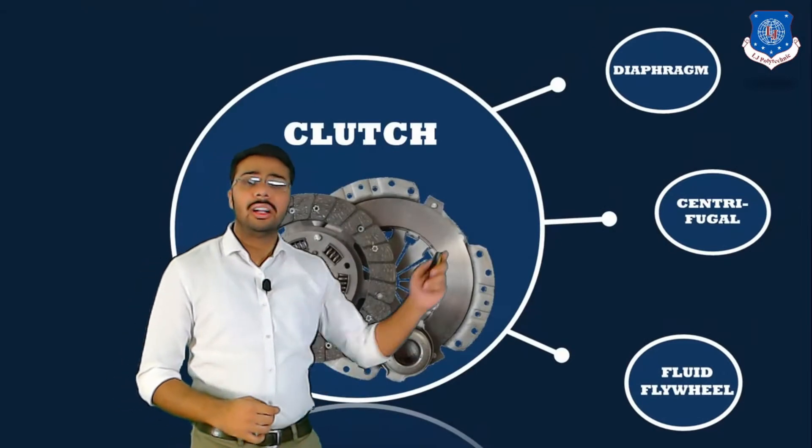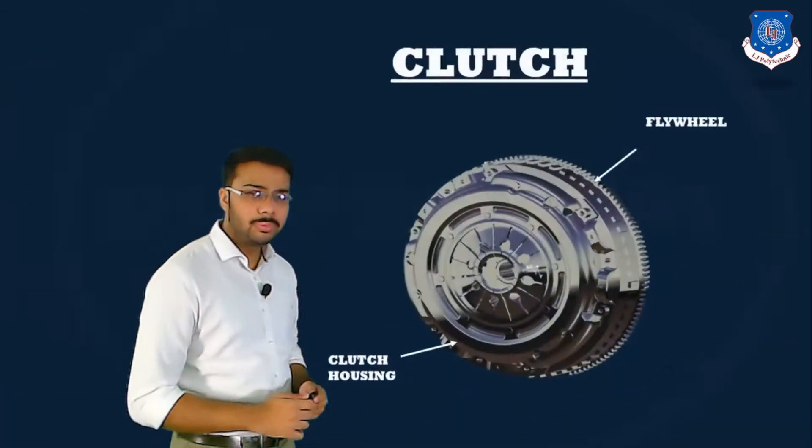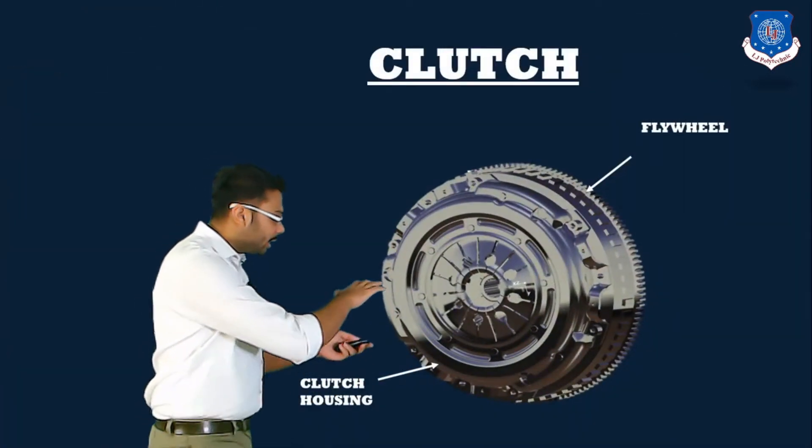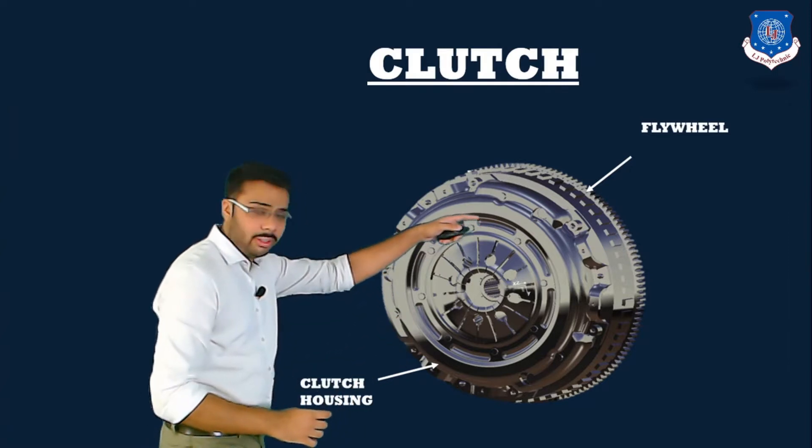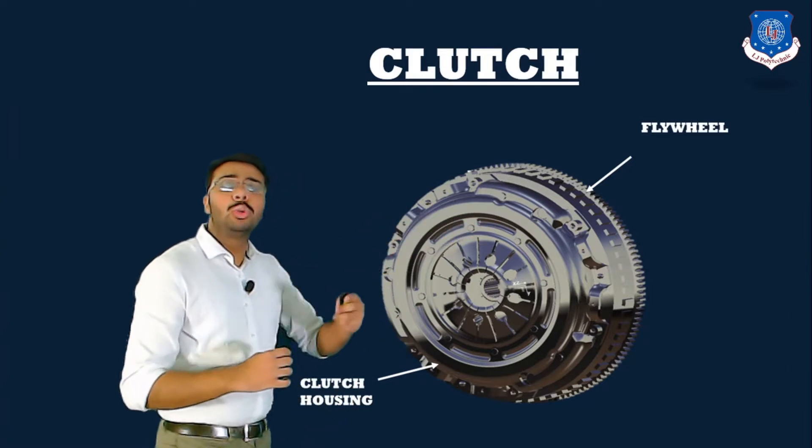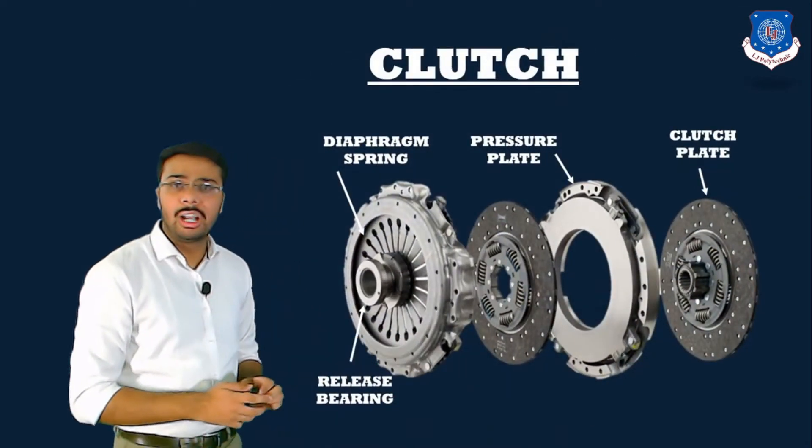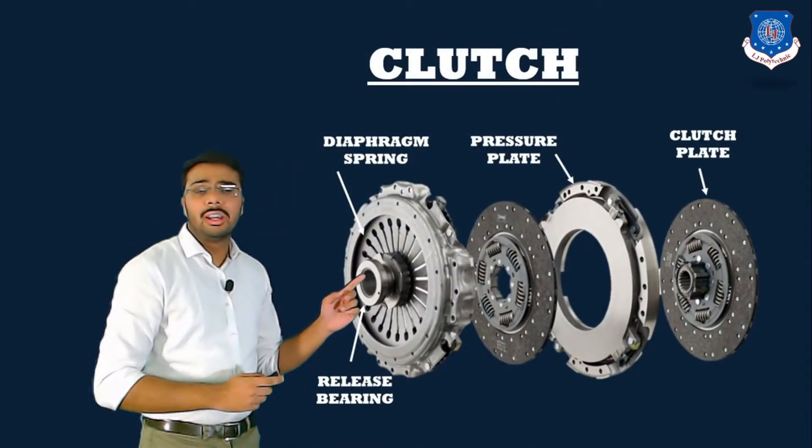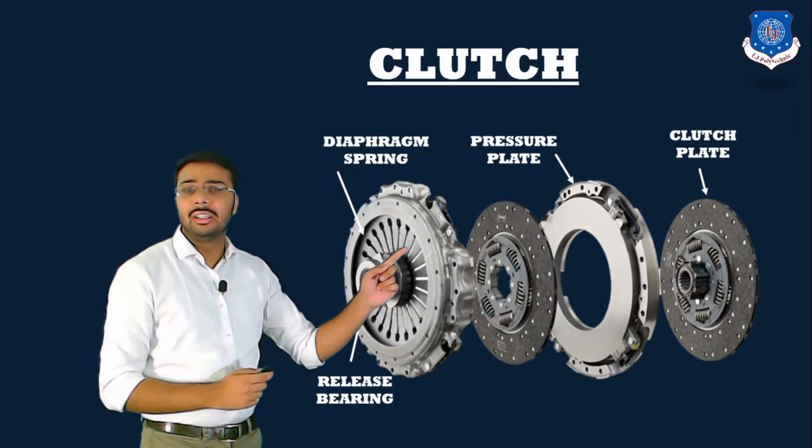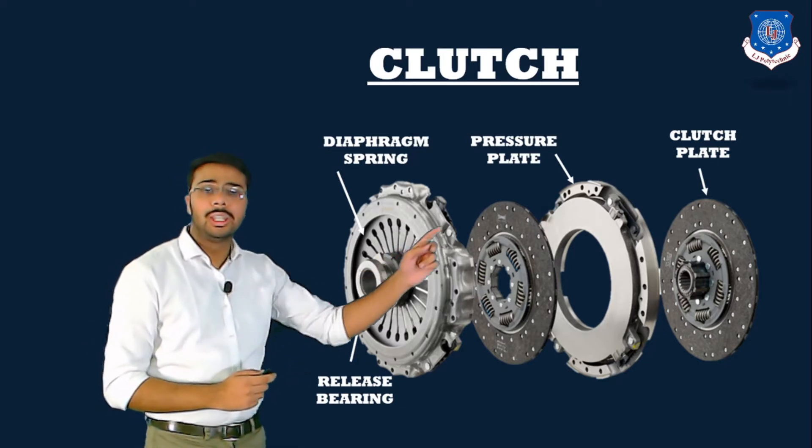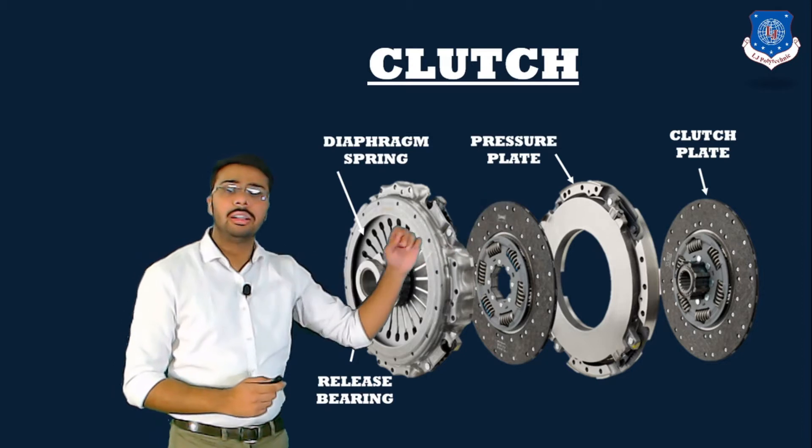Now let us see the diaphragm type clutch. Here you can visualize the clutch housing and the flywheel. Clutch housing is directly mounted on the flywheel. Now let us open it up and see the components of clutch. First is release bearing, then diaphragm spring, then the pressure plate and the clutch plate.